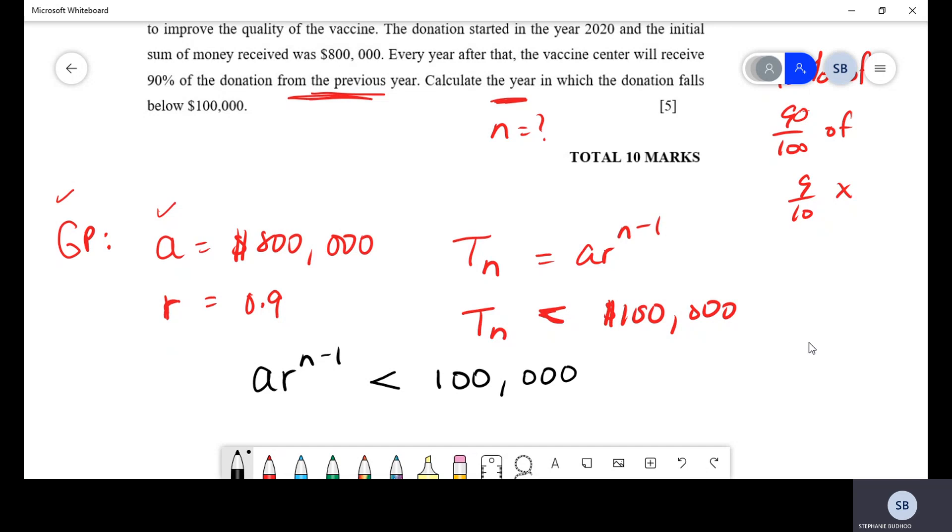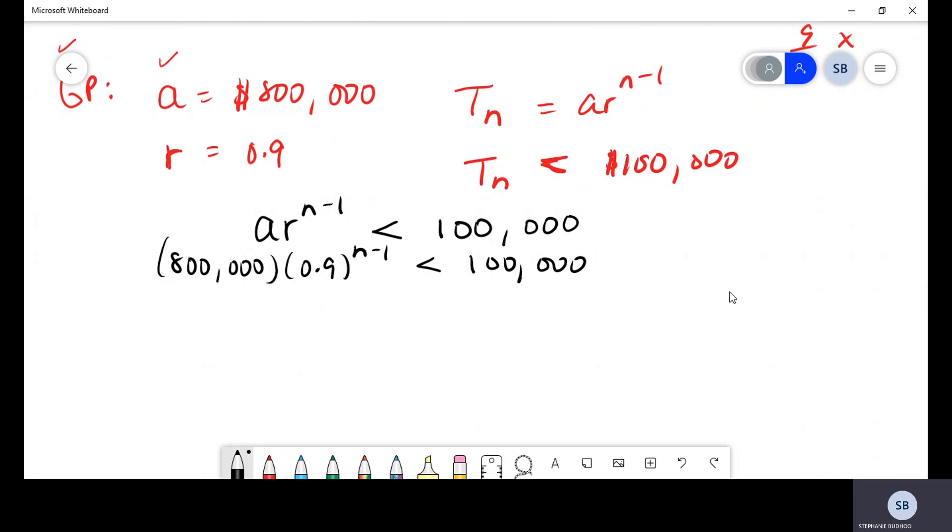Creating that setup, we will get A as a value of $800,000. So, that's $800,000 times 0.9 to the power of N-1. Remember, N is what we want to find in which year would that value be less than $100,000? Now, I know you're seeing a lot of zeros, but actually, they're going to all cancel. They're going to cancel very, very nicely, actually. We're going to end up getting 0.9 to the power of N-1 is simply less than $100,000 all over $800,000. All of these will cancel and you just end up getting 0.9 to the N-1 being less than 1 over 8.